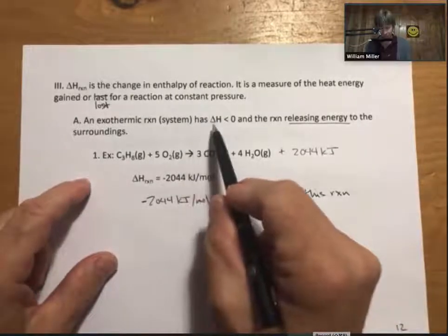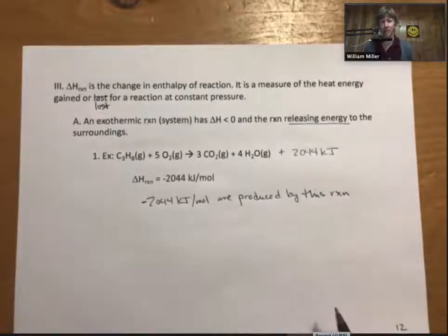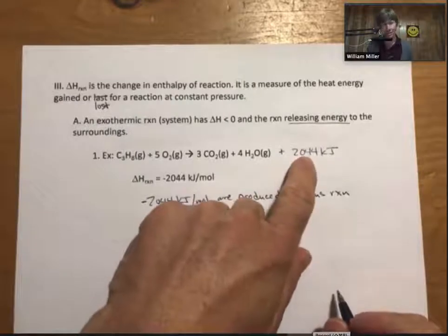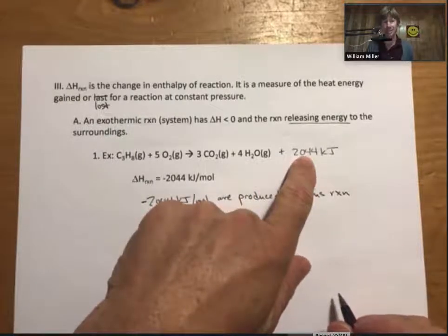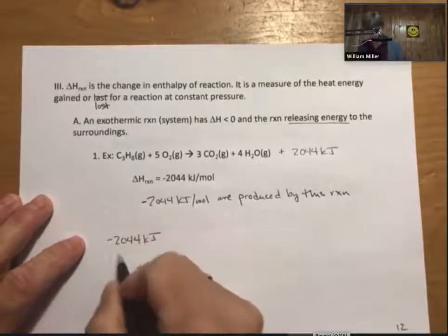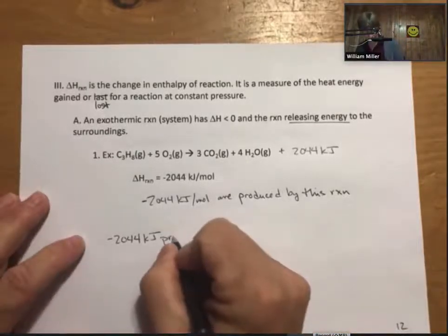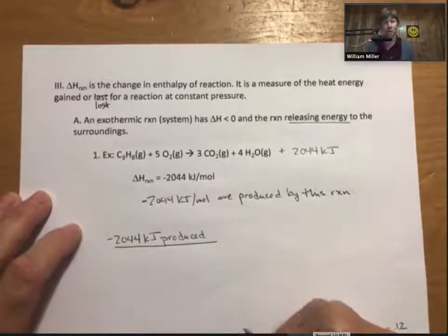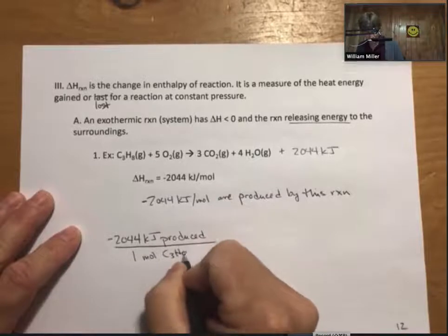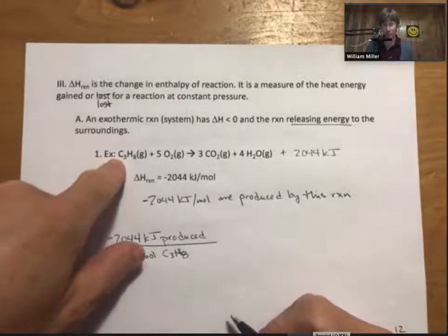So exothermic reaction has delta H less than zero. It's a negative number. It is releasing energy. And what we can do is we can write unit conversion factors for this. And I'll write a couple of them. So I like to treat this 2,044 as the coefficient. So I'll put back in the minus sign and say there are minus 2,044 kilojoules, or that much energy produced,